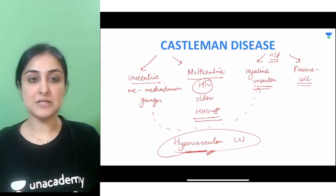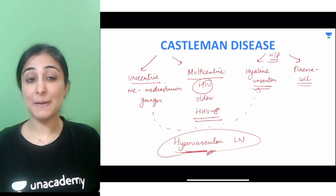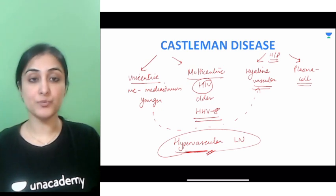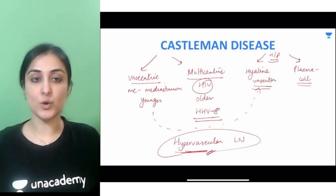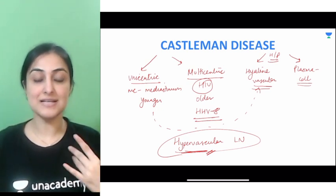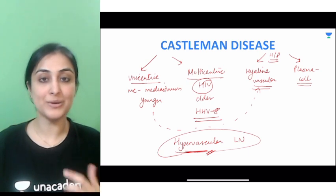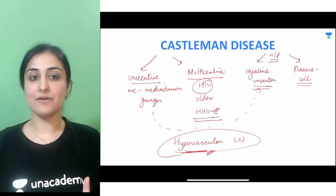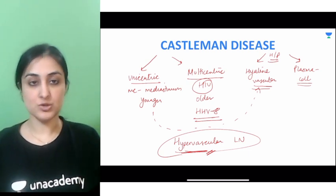Briefly, that is Castleman disease. Remember all the lymphoproliferative disorders — Kikuchi, Kimura disease, Rosai-Dorfman — all of these are very, very important.